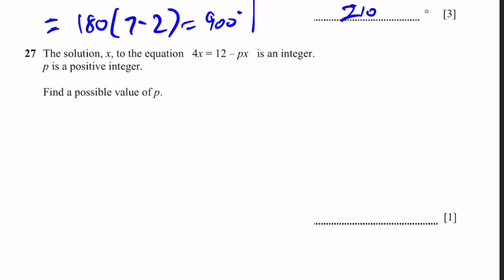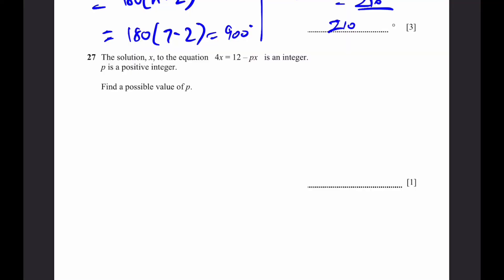Now, going to question 27. The solution x to the equation 4x equals 12 minus px is an integer. p is a positive integer. And find a possible value of p. Well, so 4x plus px equals 12, bringing px to this side. That means x times 4 plus p is equal to 12. x is equal to 12 by 4 plus p, and which is equal to an integer. And p is a positive integer. So if you want to make x as an integer, we need to have p equals 2 or p equals 8.